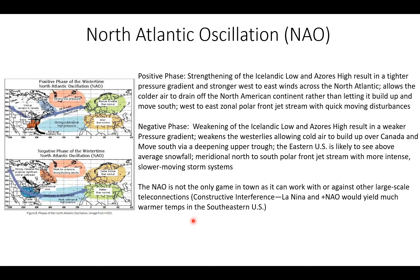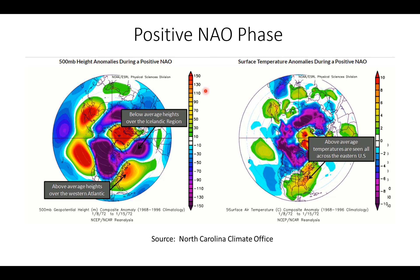But here's one thing to really take note of: the NAO is not the only game in town. There are a lot of other teleconnections out there that can either work with the phase of the NAO or against it. An example of this would be a constructive interference situation where you get a La Niña winter combined with a positive phase of the NAO, which would yield generally much warmer temps across the southeastern United States. So we can look at NAO all day long, but you also have to look at other teleconnections — whether you're getting constructive interference or destructive interference where opposing teleconnections offset each other.